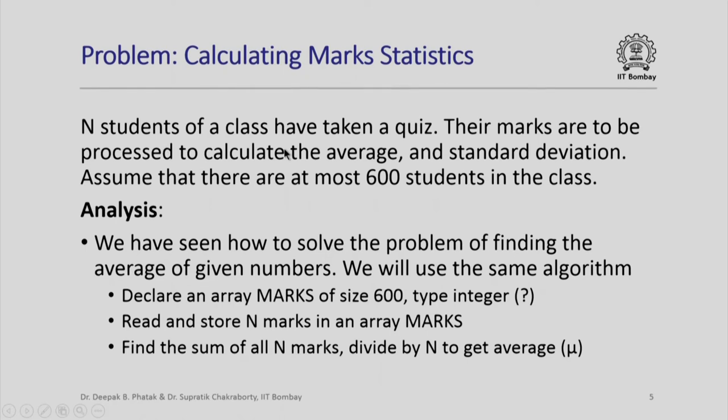N students of a class have taken a quiz. Their marks are to be processed to calculate the average and the standard deviation. We assume that at most 600 students are there in the class. Why do we need this number? We need this to define the size of the array so that the array can hold marks for all students.